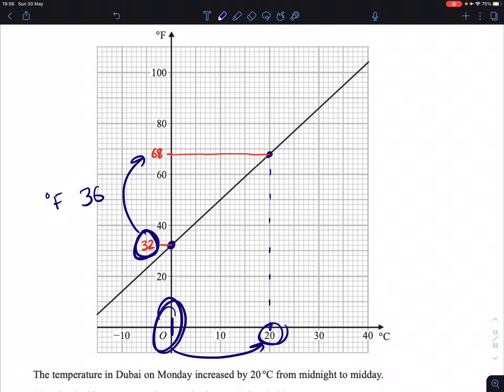So if that was from 0 to 20, 20 to 40 would be the same thing. We would go up another 36, and then if we went from 40 to 60, we would go up another 36 again.